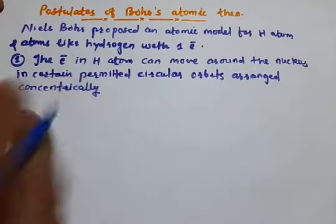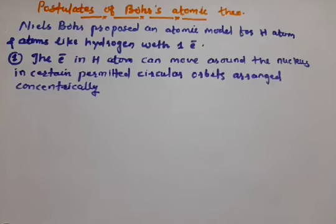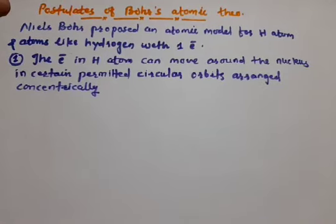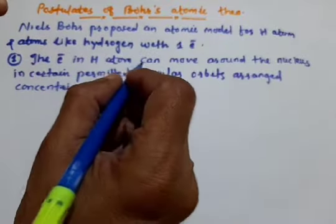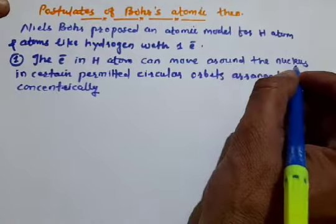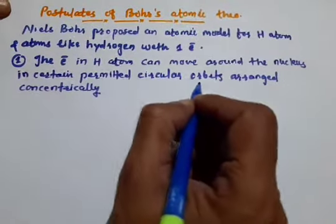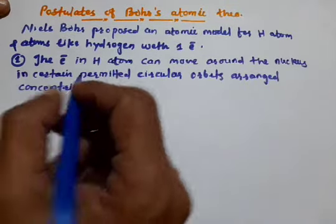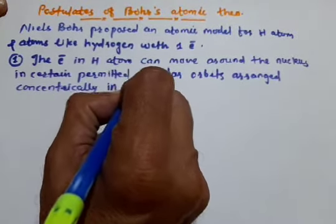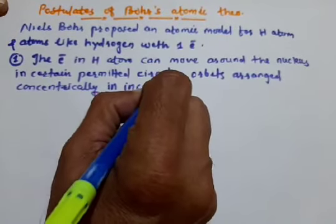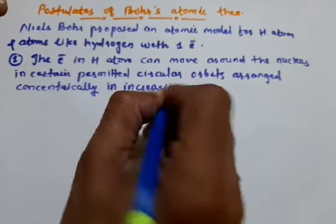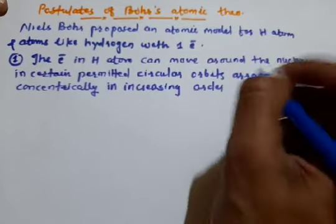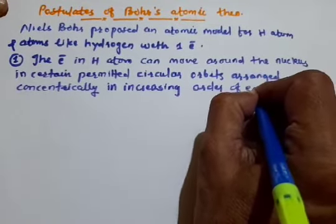Concentrically means there are two or more circles having only one center — those circles are called concentric circles. So, the electrons in hydrogen atom can move around the nucleus in certain permitted circular orbits which are arranged concentrically in increasing order of energy.